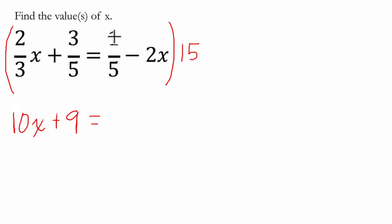Then we have 1/5 of 15, or 15 times 1 divided by 5, which is 3. And then minus 2 times 15, which is 30, so it's 30 groups of x.